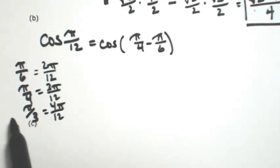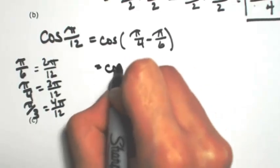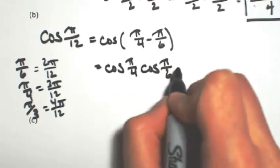Notice I could have also done pi over 3 minus pi over 4. That would also work. So expanding this out, cosine, cosine, sine, sine. Changing that sign.